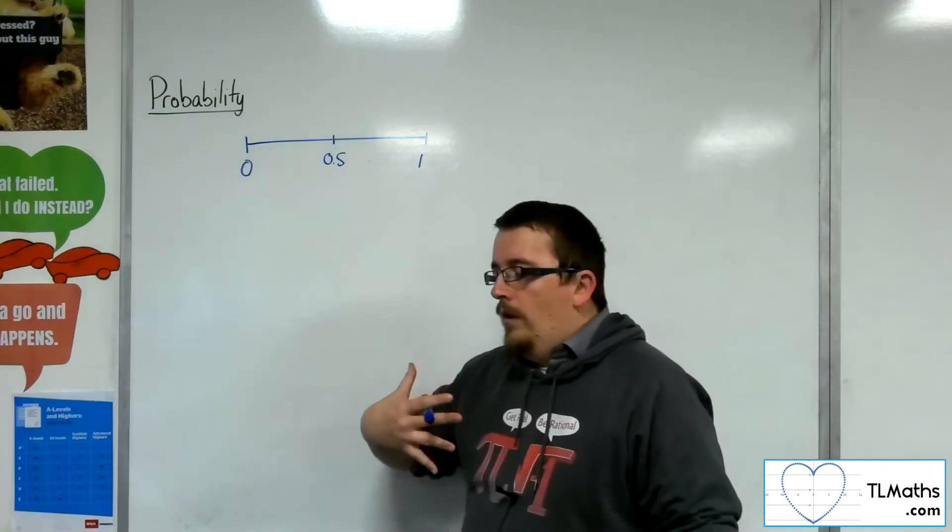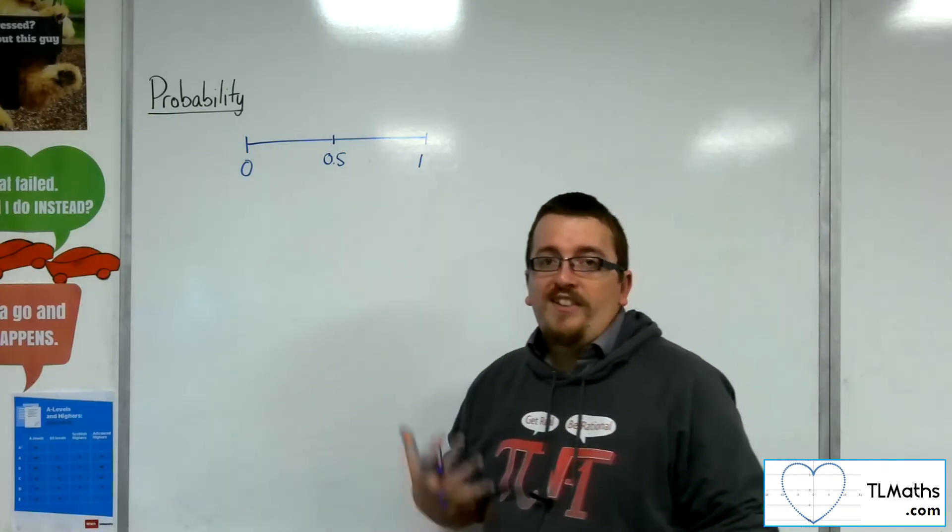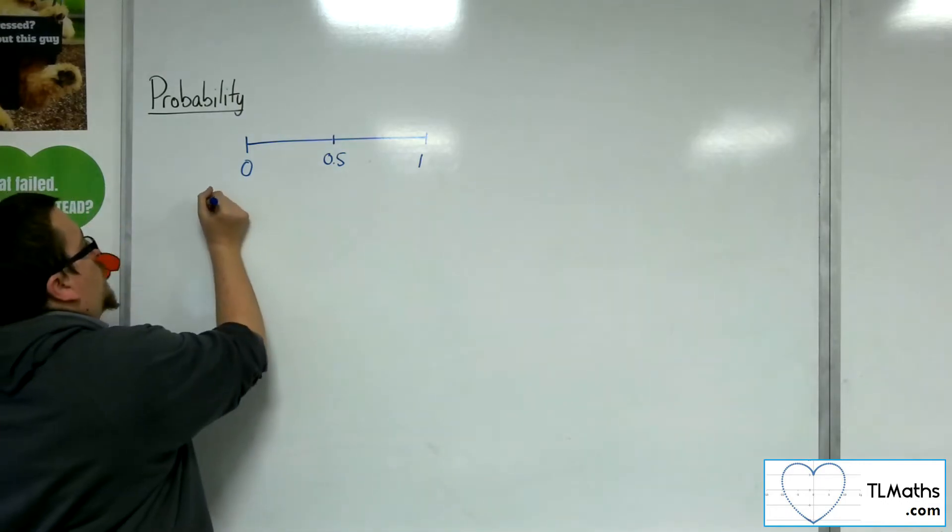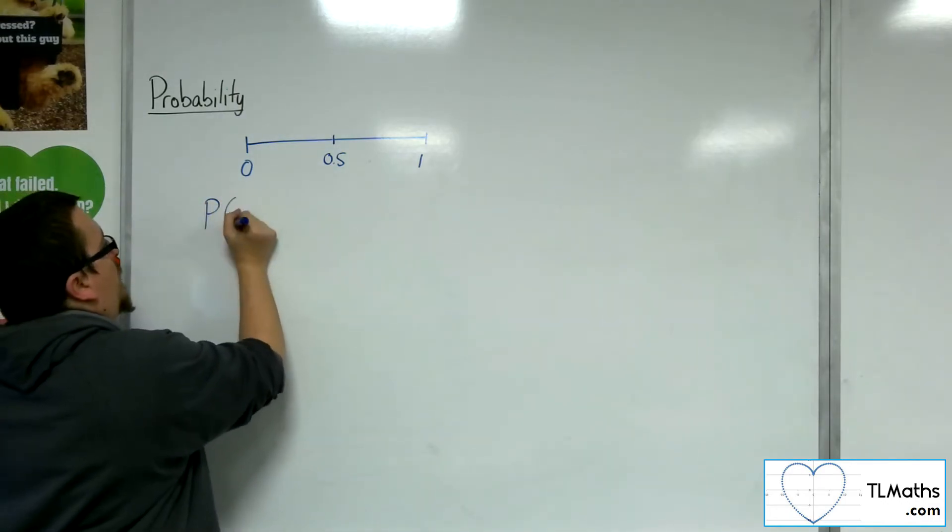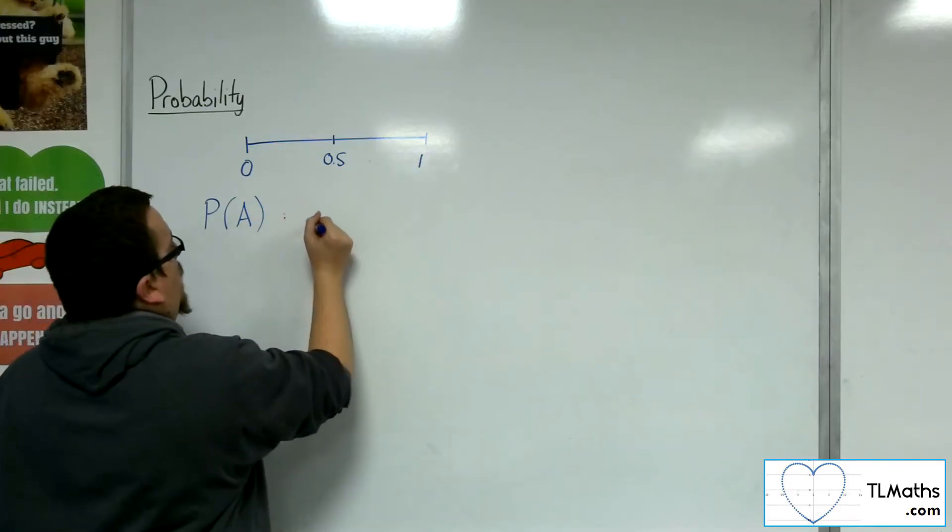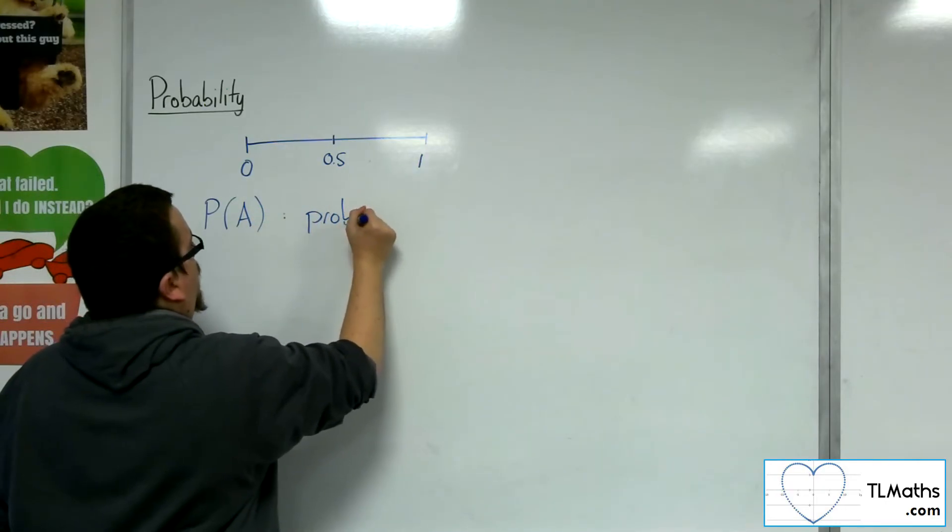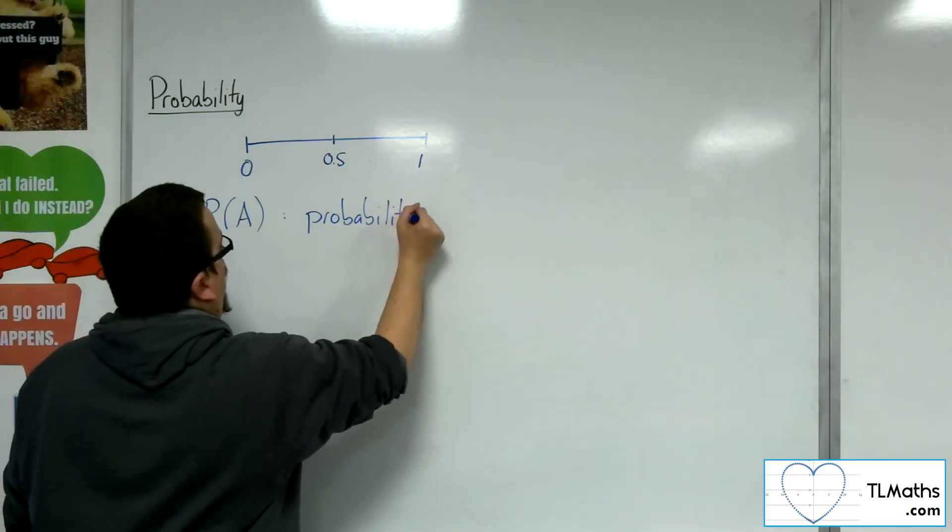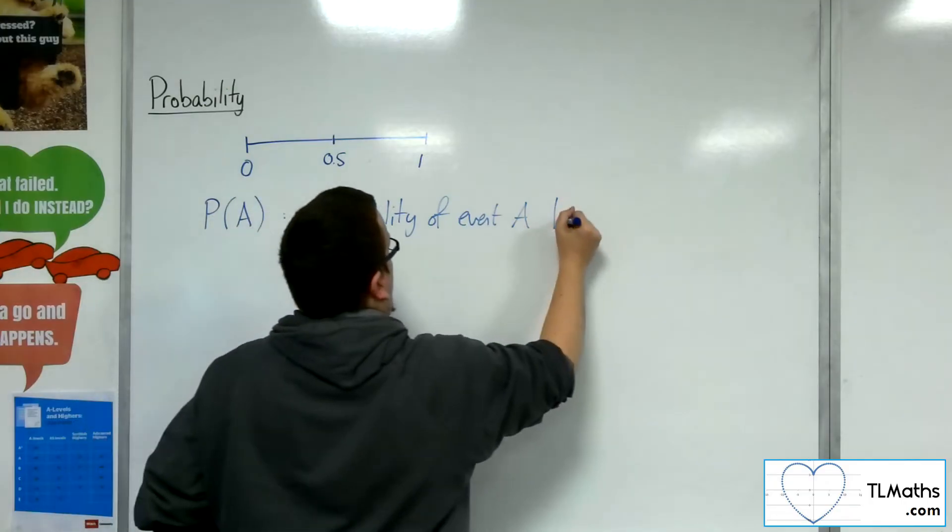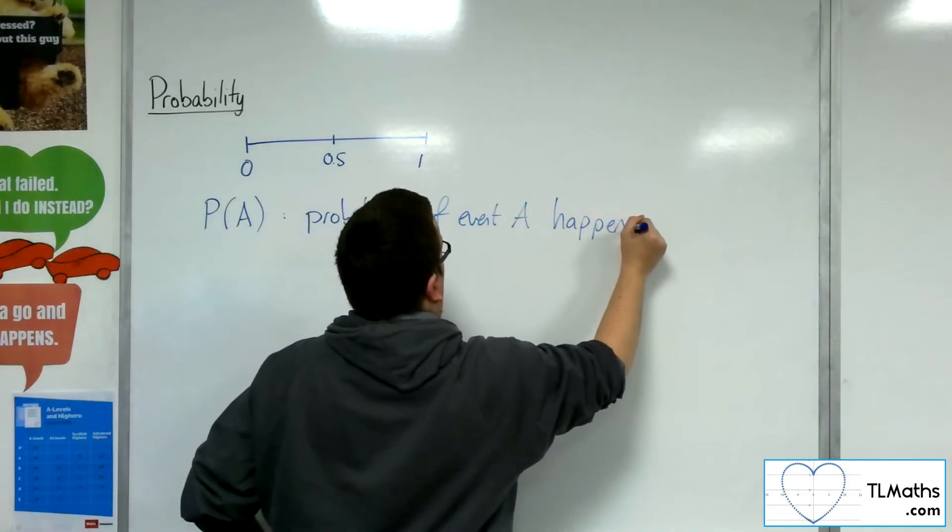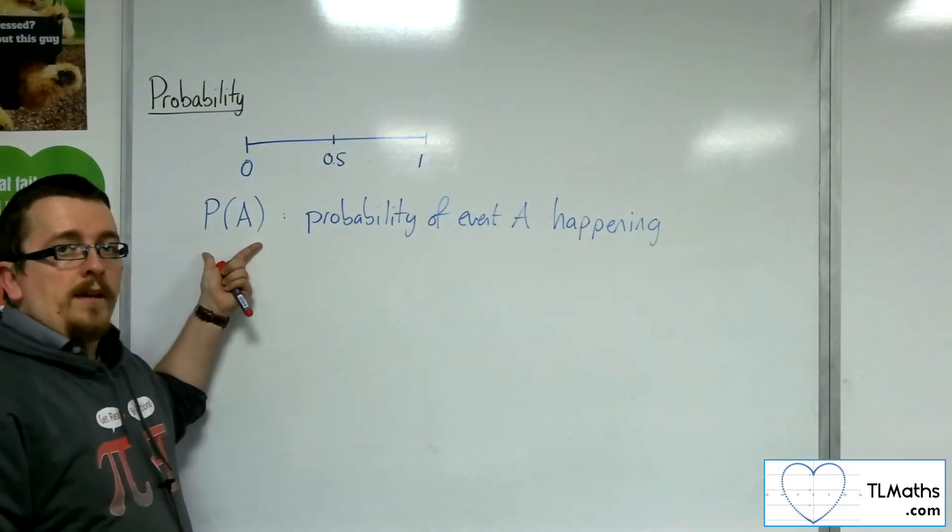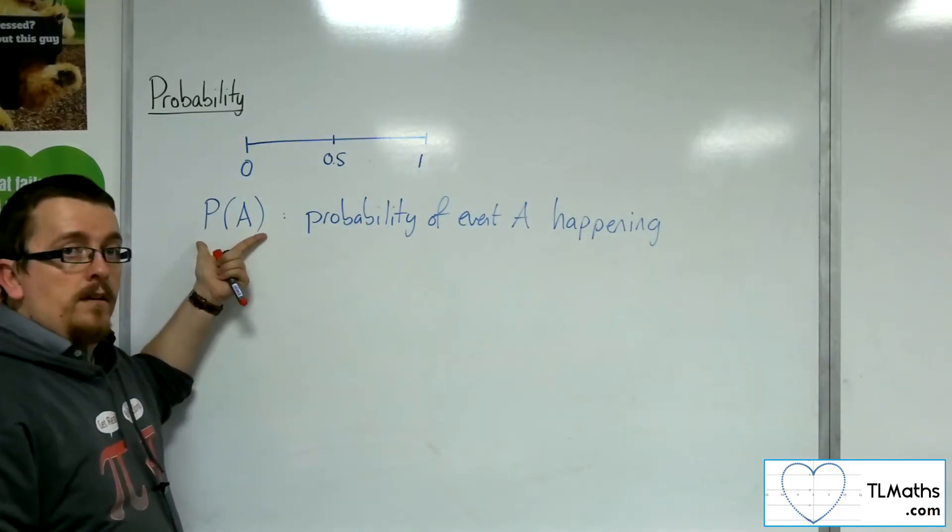How we write probabilities down is we use a notation of writing P(A), and this would be the probability of event A happening. So the probability of A happening is written P(A).